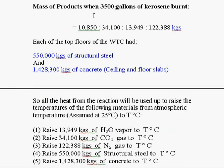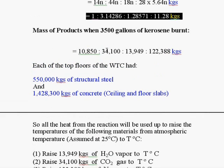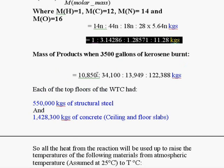So, the mass of the products, when 3,500 gallons of kerosene is burnt, the 3,500 gallons equals 10,850 kilograms. So, by proportion, we work out how much byproducts that would give.